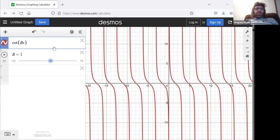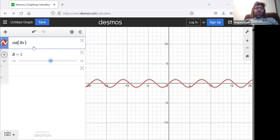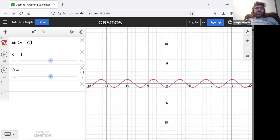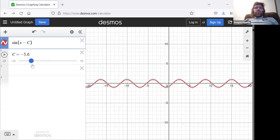Let's see. With the sine, the cosine, and the tangent, we've seen what happens if we put a C here. It moves the graph horizontally.